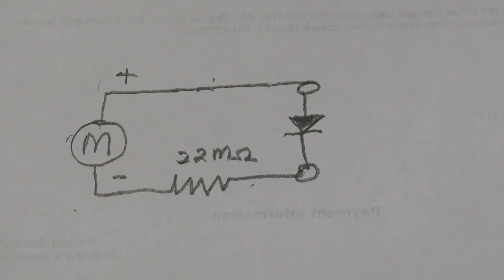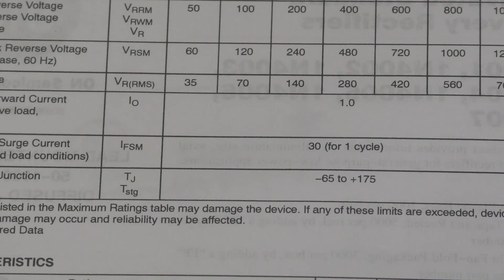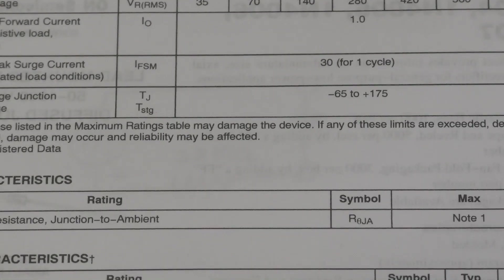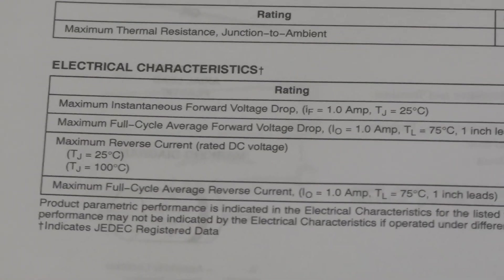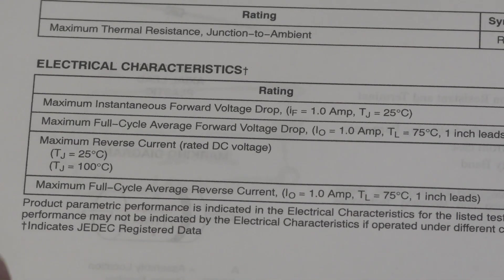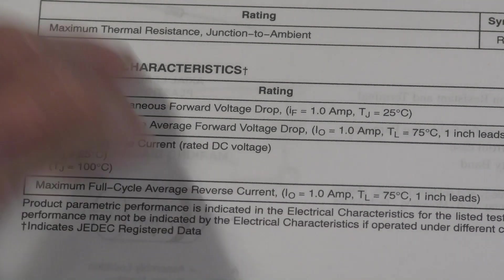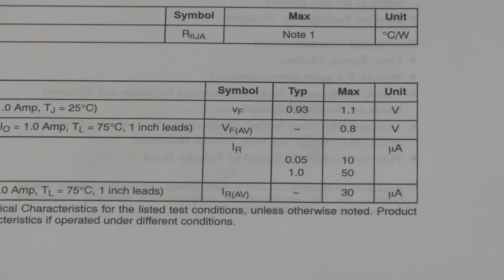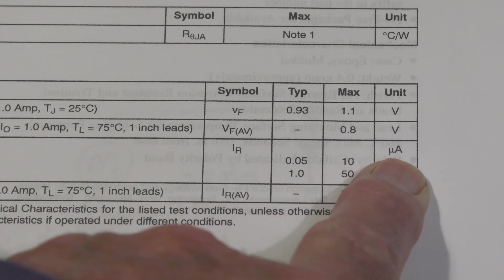Once again we're going to look at the data sheet for the 4000 series. Notice down here we have a maximum reverse current, and sliding over to the left we see that it says typically it's only 0.05 microamperes.